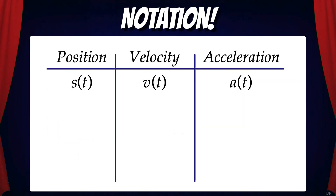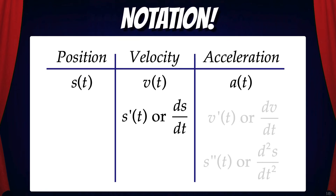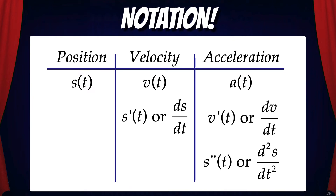Now let's look at some common notation for position, velocity, and acceleration functions. For this example, let's call position s(t). But remember, the letter name of the function might be different depending on the problem. Now we have velocity, which we'll call v(t). But since velocity is the derivative of the position function, it can also be called s'(t) or ds/dt. Now let's call acceleration a(t). But remember, acceleration is the derivative of the velocity, so we can call it v'(t) or dv/dt. But acceleration is also the second derivative of position, so we can also call it s''(t) or d²s/dt².